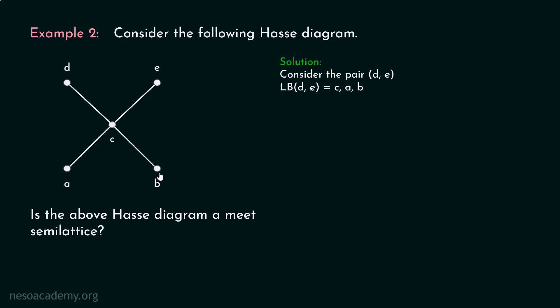In order to find the greatest lower bound, we have to see the first meeting point. Consider these two points and trace the path down. You can see the first meeting point — this is the first meeting point. So, greatest lower bound of d and e is c.